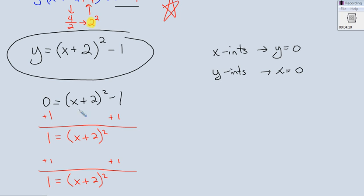x plus 2 quantity squared. Now the question is, how do I undo a square? To undo a square, I take a square root. If I do it to one side, I've got to do it to the other. So now I'm left with x plus 2 equals, sorry, I'm getting in a hurry and it doesn't work as well, plus or minus 1.